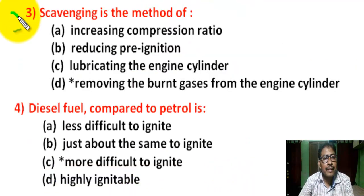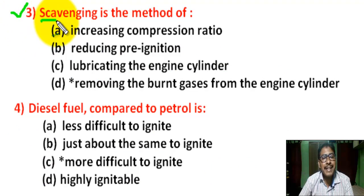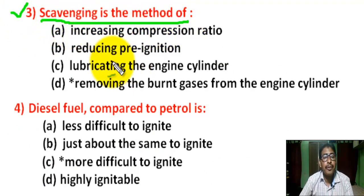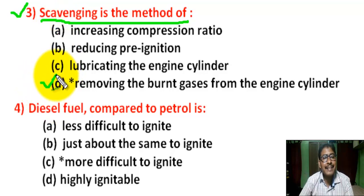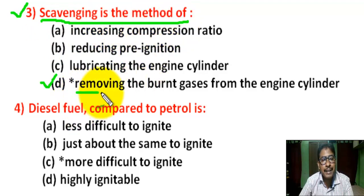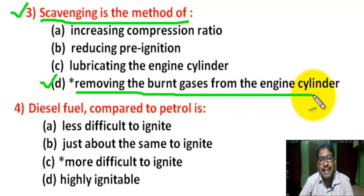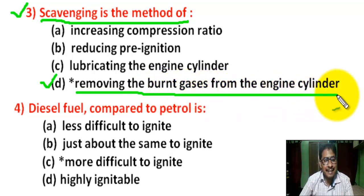Question number 3: Scavenging is the method of — there are four options. Correct answer is D. Scavenging is the method of removing the burnt gases from the engine cylinder.